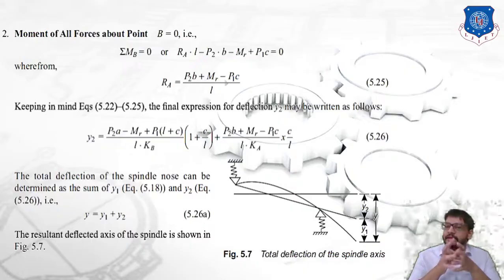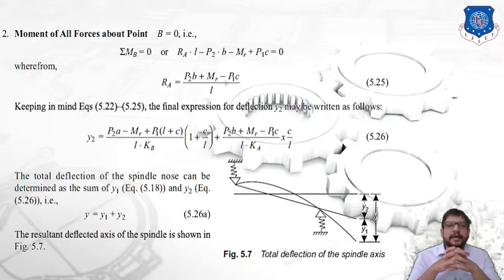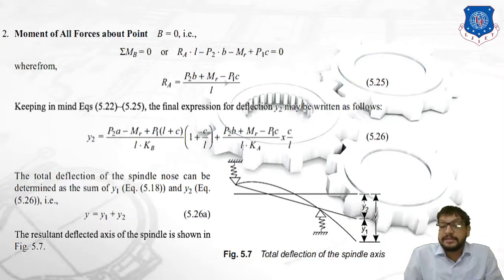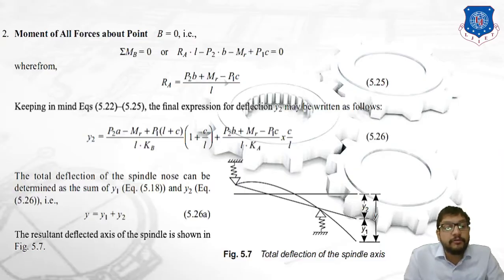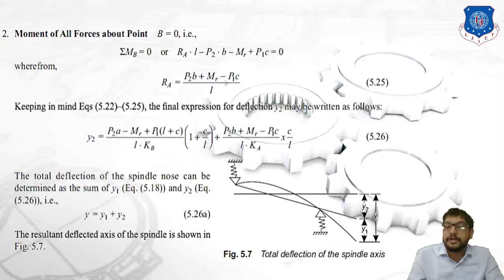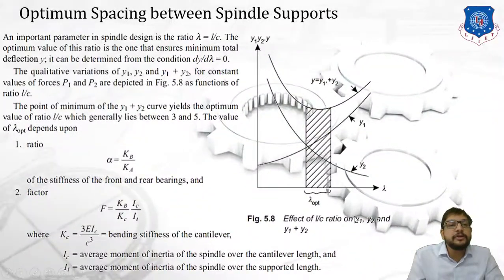Using equations 5.22 and 5.25, the final expression for deflection y2 is: y2 = [(P2·a − MR + P1·(L + c)) / (L·k_b)] × (1 + c/L) + [(P2·b + MR − P1·c) / (L·k_a)] × (c/L), which is equation 5.26. The total deflection of the spindle nose is then y = y1 + y2, combining equations 5.18 and 5.26. The resultant deflected axis is shown in figure 5.7.